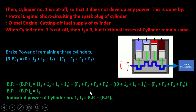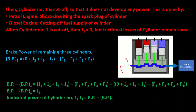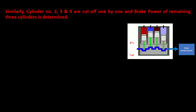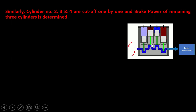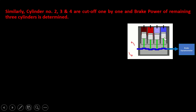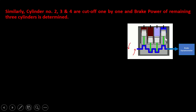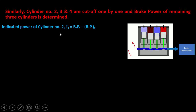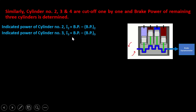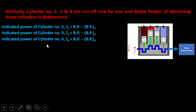This formula is helpful because we find the indicated power of the other cylinders using the same method. We cut off cylinder 2, then 3, then 4, one by one, and find the brake power of the remaining 3 cylinders each time. This gives us: I2 = BP − BP2, I3 = BP − BP3, and I4 = BP − BP4.